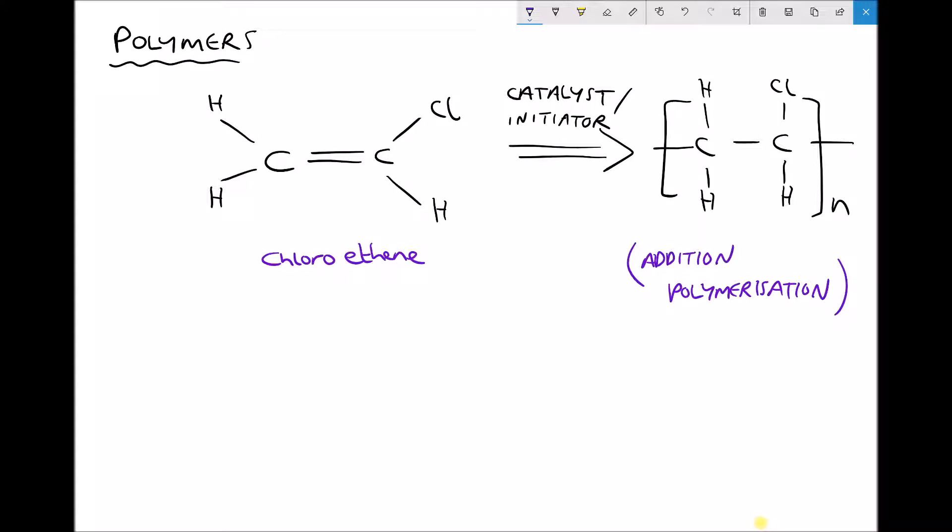If we can break one of those carbon bonds then each of those carbon atoms will have a free electron to react with another chloroethene molecule. Let's remove one of those bonds and in its place we'll have two free electrons, one on the left hand carbon and one on the right hand carbon.